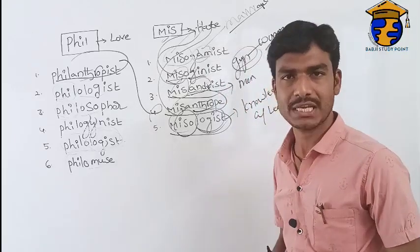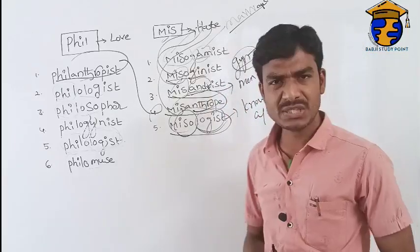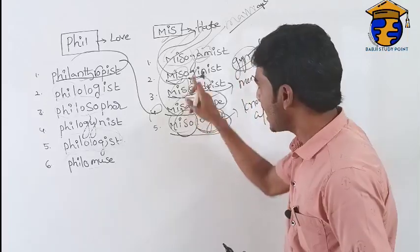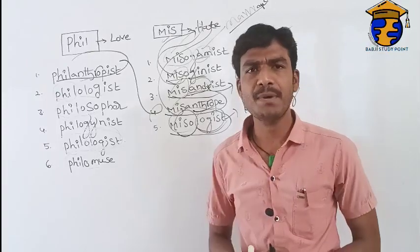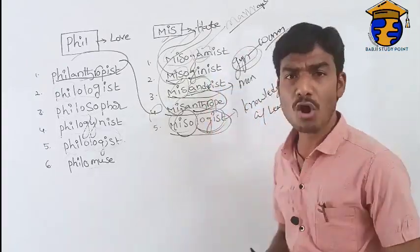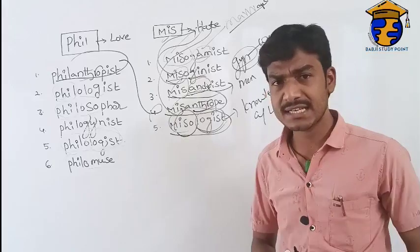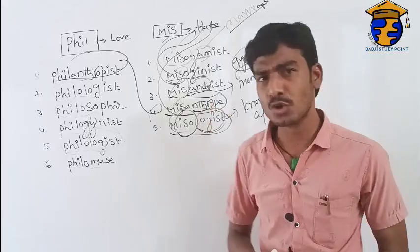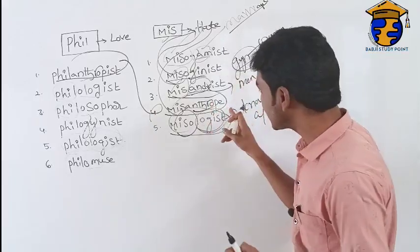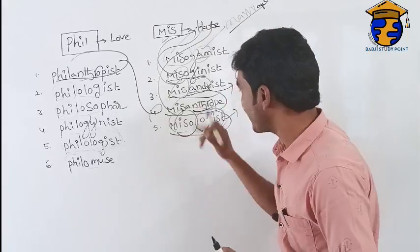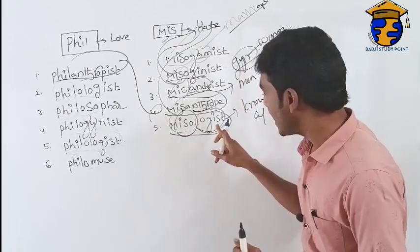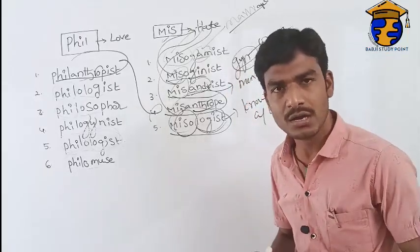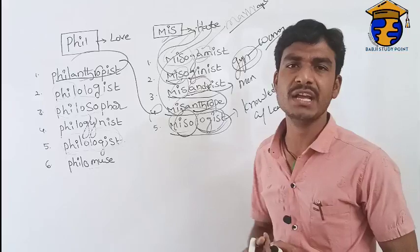A lover of music is called a philomusist. A person who hates marriage is called a misogamist. A person who hates women is called a misogynist. A person who hates men is called a misandrist. Hatred of mankind is called misanthropy, and hatred of knowledge and learning is called misologist.